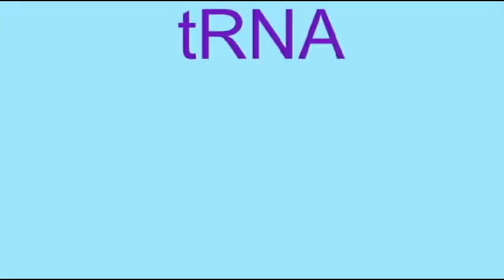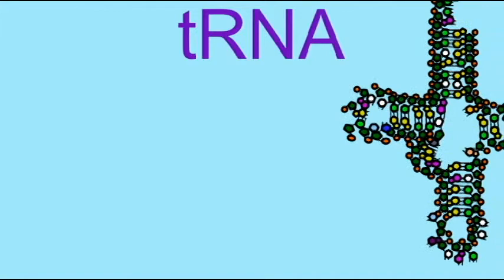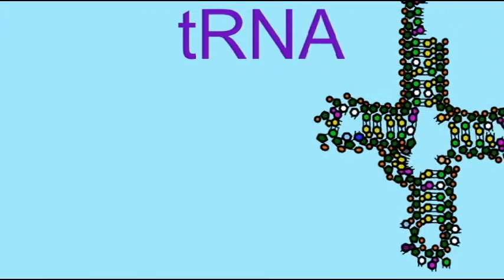Another class of RNAs, tRNAs or transfer RNAs, are different. They are small RNA molecules, about 80 nucleotides long. The original transcripts may be twice as long, but many bases were removed. And a number of bases were changed to unusual bases outside the usual guanine, cytosine, adenine, and uracil.